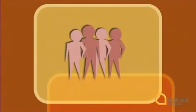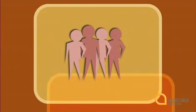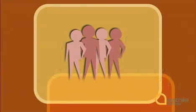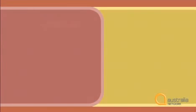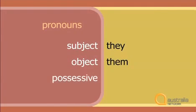The patients' homes — their homes. The patients' friends — their friends. The patients' families — their families. So there are three forms pronouns take: the subject form, like 'they'; the object form, 'them'; and the possessive form, 'their'.